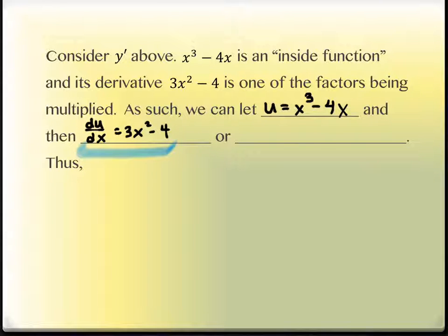Now I want to take this and rewrite it. So it's going to say du = 3x² - 4 dx. I'm just multiplying the dx to the other side. Everybody good so far? Really just a little algebraic manipulation there.